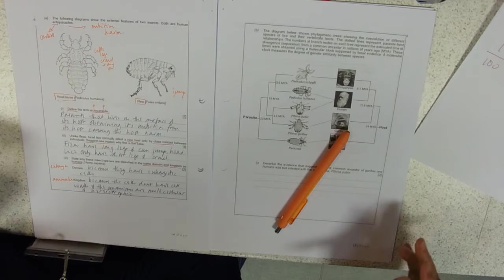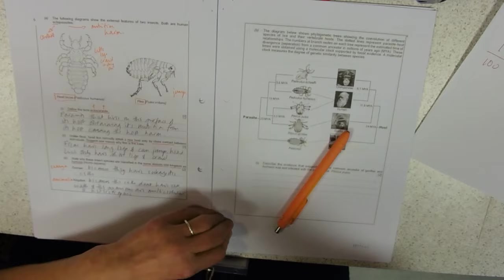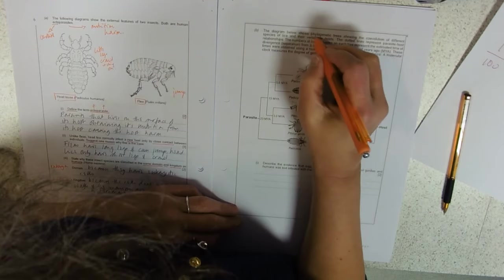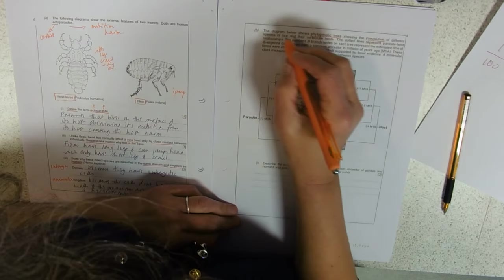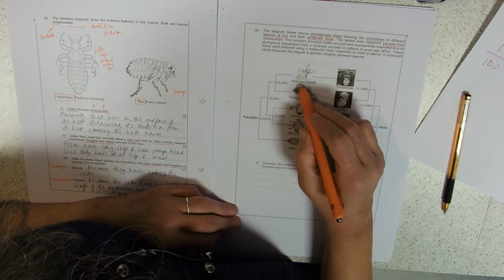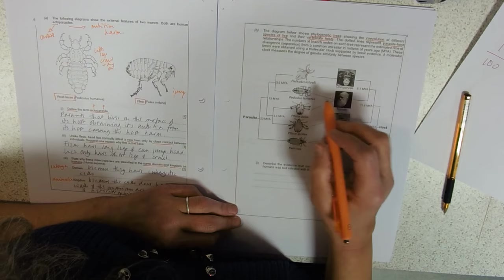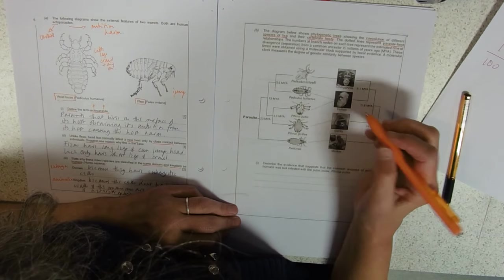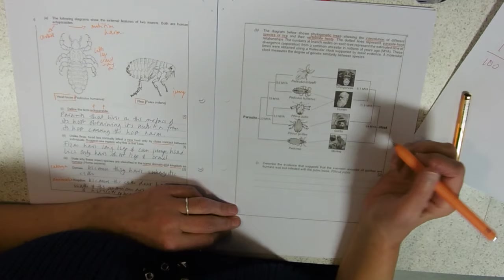We've got phylogenetic trees, which always reminds me of that question that makes you cry. Phylogenetic tree with co-evolution of different species of lice and their hosts. Dotted lines represent the parasite-host relationship. So Pediculus schaeffi infests chimpanzees, Charles Darwin has Pediculus humanus, which is the head louse, and Pthirus pubis, and I think we can all guess where that lives.